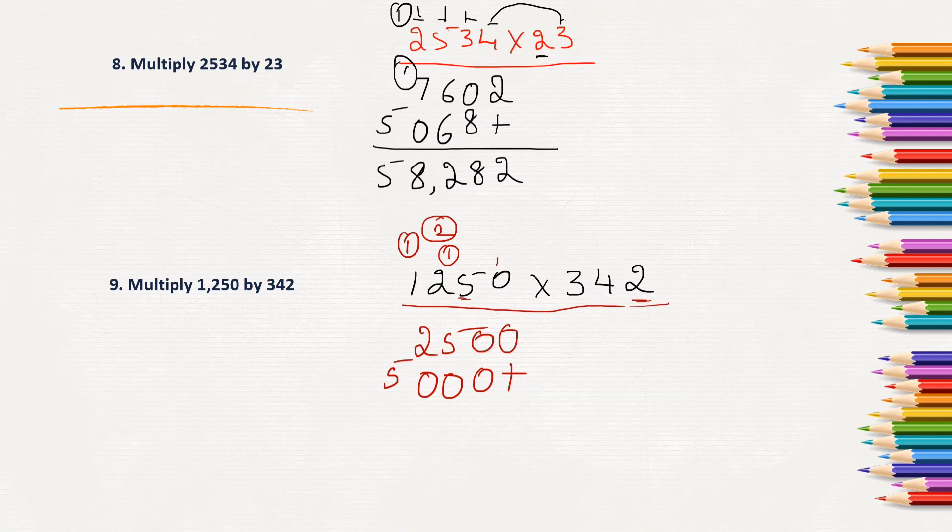Next, we have to multiply 1250 with 3, that is hundreds place. So, ones place has to be empty, tens place has to be empty. We will write in hundreds place. 3 times 0 is 0.